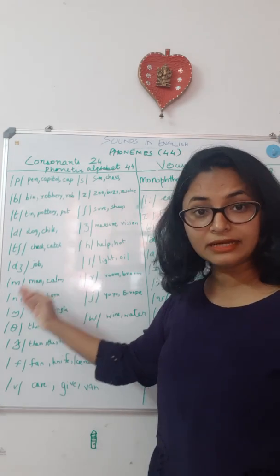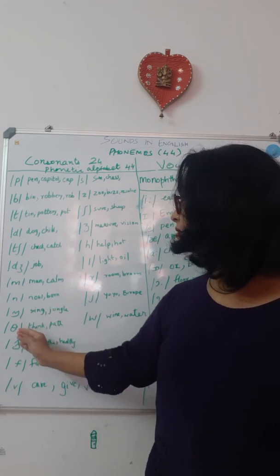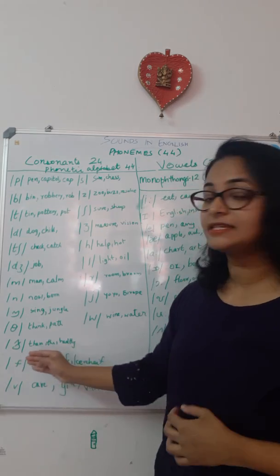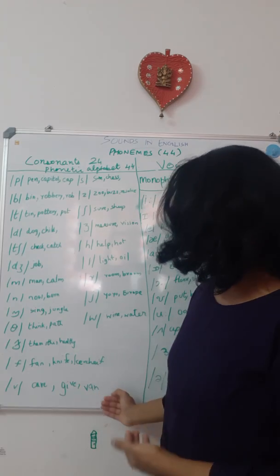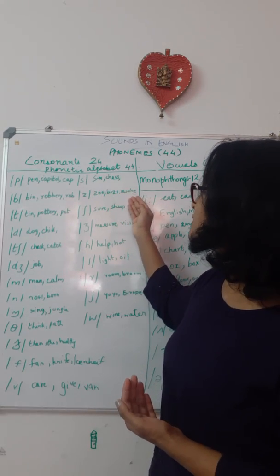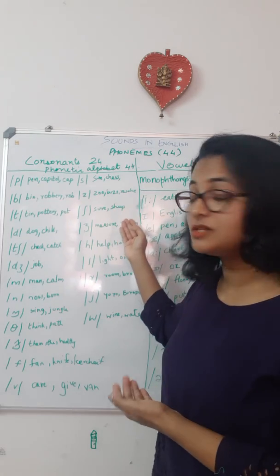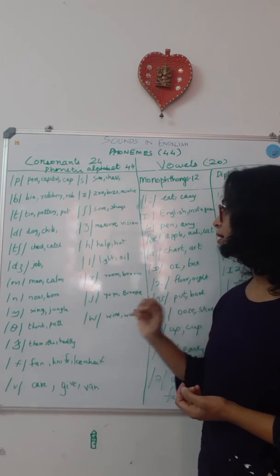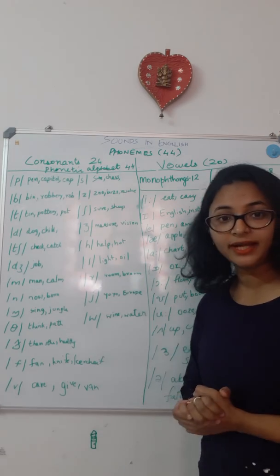/m/ as in man, calm. /n/ as in nose, nib. /ŋ/ as in sink, jungle. /θ/ as in thing, pat. /ð/ as in them, that. /f/ as in fan, knife, kerchief. /v/ as in van, give, cave. /s/ as in son, chess. /z/ as in zoo, bus, resolve. /ʃ/ as in sure, sheep. /ʒ/ as in measure, vision. /h/ as in help, heart. /l/ as in light, oil. /r/ as in room, broom. /j/ as in yo-yo, Europe. /w/ as in wine, water, etc.